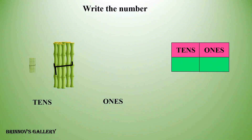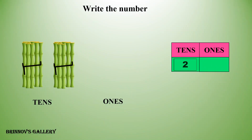1, 2 — 2 tens. Zero ones. The number is 20.